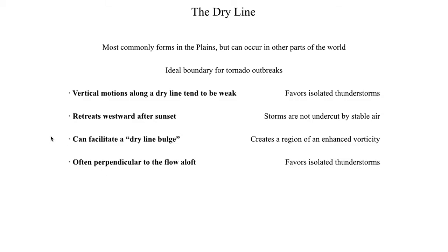Another key thing that makes dry lines so ideal is that typically a dry line is perpendicular to the flow aloft. If you're looking for isolated thunderstorms — not a squall line, which can produce tornadoes but not typically strong to violent ones — when you've got flow that's perpendicular to a boundary, you're much more likely to get isolated thunderstorms. Typically a dry line extends in the south-to-north direction and the winds aloft run west to east, so the winds are perpendicular to the dry line at the surface.